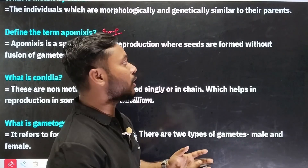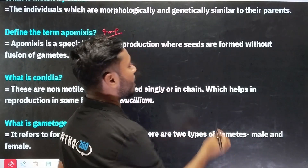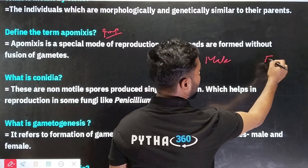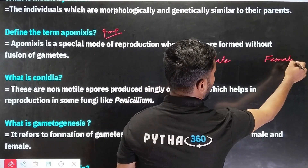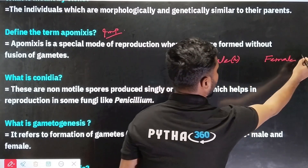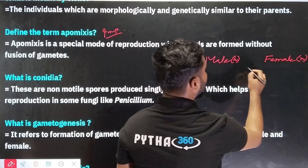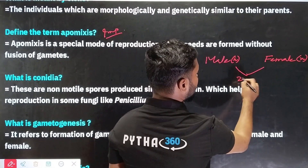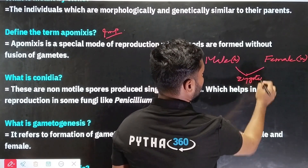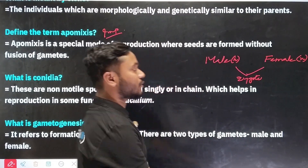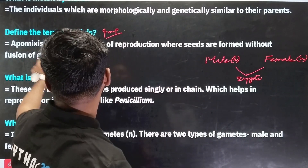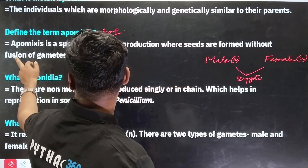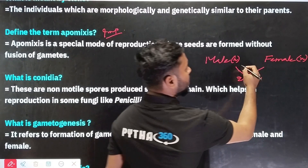Apomyxis is a special mode of reproduction where seeds are formed without fusion of gametes. So, what do we find out about these? The female gametes and male gametes — there is no fusion of gametes. It is a special type of reproduction where seeds are formed without fusion of gametes.